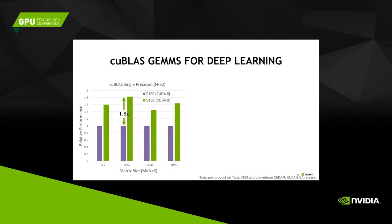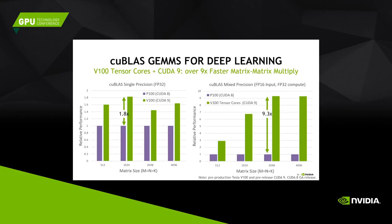In this slide you can see the performance improvements from P100 with CUDA 8 to V100 with CUDA 9. Depending on matrix size, you see a 1.8x speedup at size 1024 with cuBLAS. When tensor cores come into play, you see a much larger speedup — nearly up to 10x — due to the parallel matrix operations the tensor cores enable.